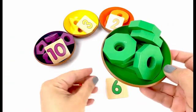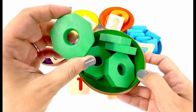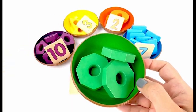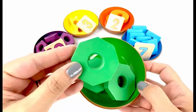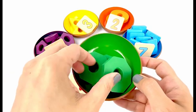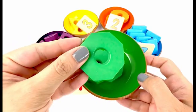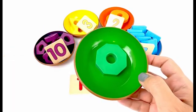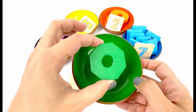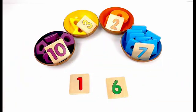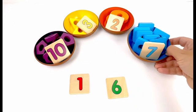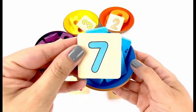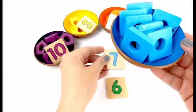The next ball is color green. I see number six in my ball. Let's count how many shapes do I have here. One, two, three, four, five, six — six green octagons!